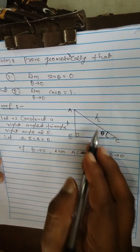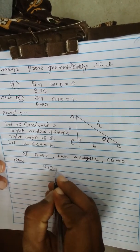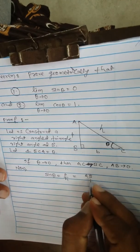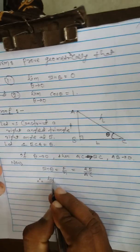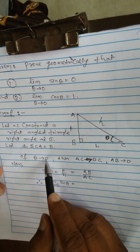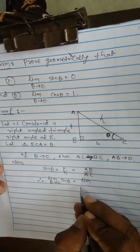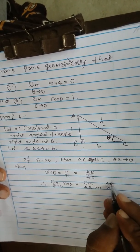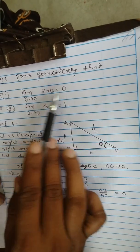Now by definition, sin theta equals P over H, which is AB over AC. Applying the limit as theta tends to 0: limit of sin theta equals the limit of AB over AC. As theta tends to 0, AB tends to 0, so substituting AB equal to 0, we get 0 divided by a finite number, which equals 0. So we have proved that limit as theta tends to 0 of sin theta equals 0.